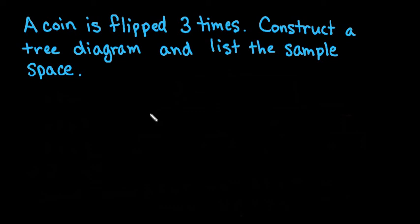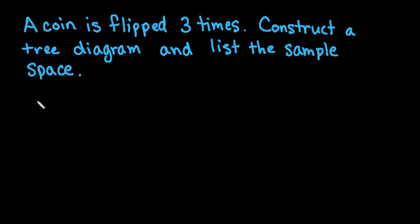For this video, a coin is flipped three times. We're going to construct a tree diagram and list the sample space, looking at all of our possible outcomes.